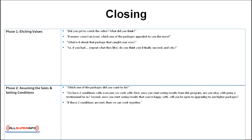Now, moving on to the closing stage of the sales process, there are three phases. Phase one is eliciting values: 'Did you get to watch the video? What'd you think? If money wasn't an issue, which one of the packages appeals to you the most? What is it about that package that caught your eye? So if you had [repeat what they like], do you think you'd finally succeed and why?' Repeat back to them what they like and ask them if they would succeed if they had that.